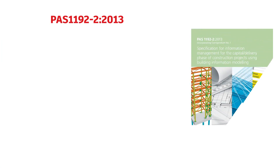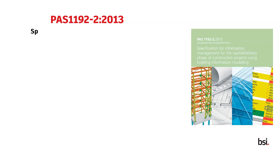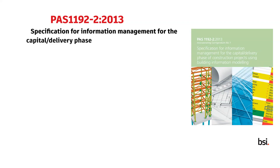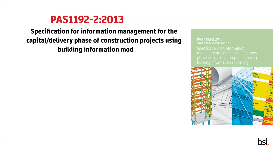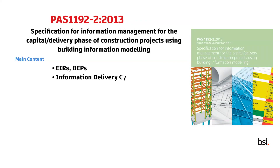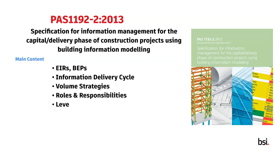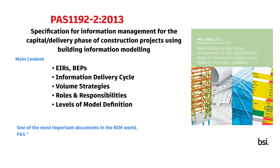Later in the same year, PAS 1192-2 was issued — Specification for Information Management for the Capital Delivery Phase of Construction Projects Using Building Information Modelling. PAS 1192-2 is one of the most important documents in the BIM world. It focuses specifically on project delivery. Its application begins with the statement of need and works through the stages of the information delivery cycle, culminating in an as-constructed Asset Information Model, AIM.